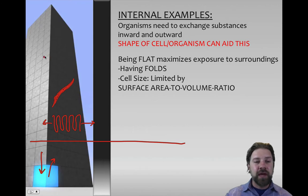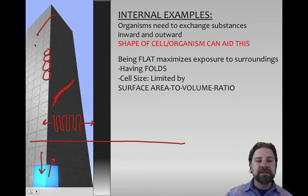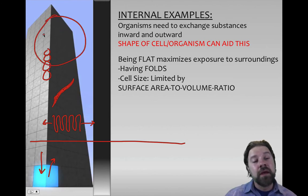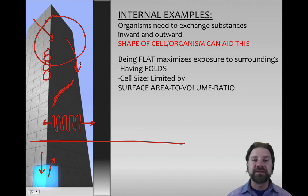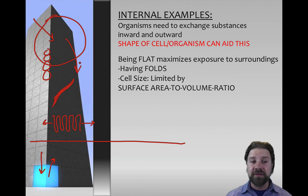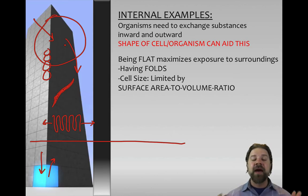Cells are also limited by their surface area to volume ratio, which is why there are no super-large cells. Cells must bring in nutrients and expel waste at a certain rate. The larger the volume of a cell, the slower diffusion becomes relative to that volume, so cells tend to stay small to maintain maximum efficiency in moving substances in and out.